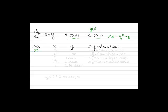We have an initial condition of (0, 1), and so we can fill in our x column: 0.25, 0.5, 0.75, and finally 1. It will be the y values that we're actually calculating.